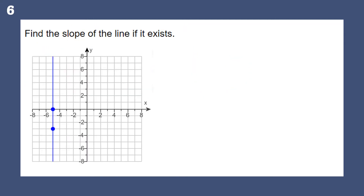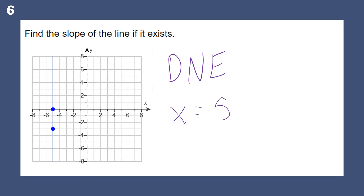Find the slope of the line if it exists. How steep would you say that line is? If you tried to ski down that slope, would it be a zero — very easy — or a 10 — really steep? In this case, it would be infinity. This slope does not exist. The reason is because this is a vertical line, x equals 5.